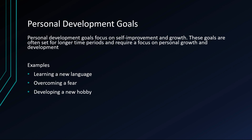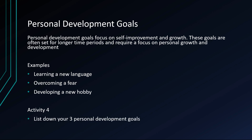Now let's go back to the activity. You can take some time out and write down three desired personal development goals. By understanding the different types of goals and examples for each, individuals or organizations can set clear and specific goals to achieve their desired outcome or personal growth.